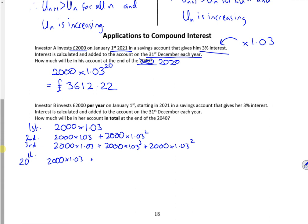So if I was doing like the 20th year, that would be like 2000 times 1.03, so that would be the invested for our final year. Then, I'm going to have the 2000 times 1.03 squared, plus 2000 times 1.03 cubed, plus all the way up to 2000 times 1.03 to the 20th. So it kind of builds and builds and builds.